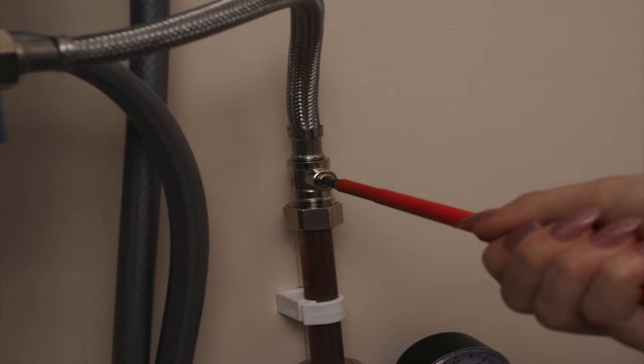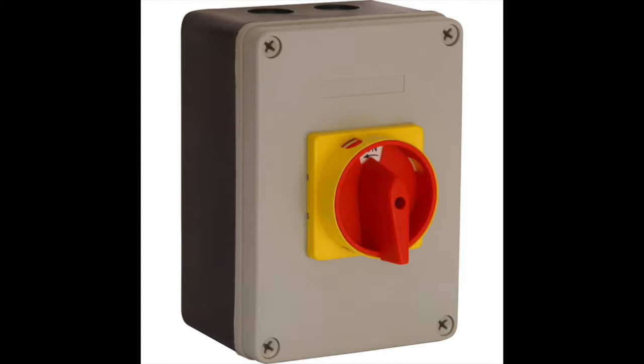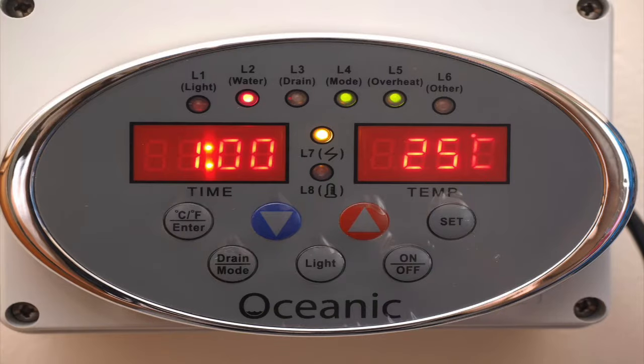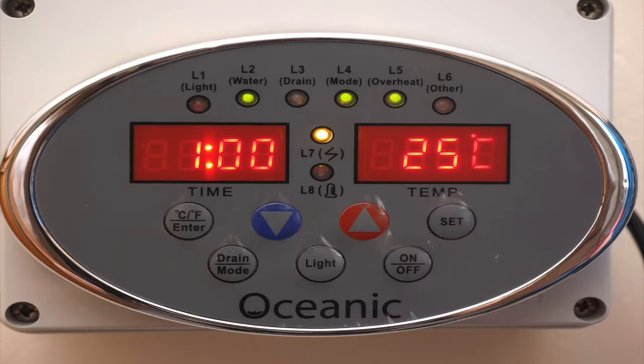Turn the water back onto the machine. Turn power onto the machine. Push the on-off button on the keypad. The machine will now top itself up with water and should turn on the elements.